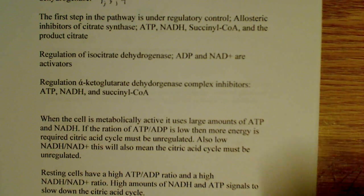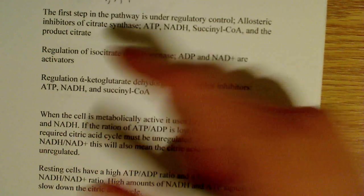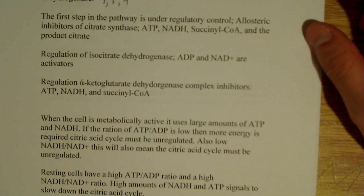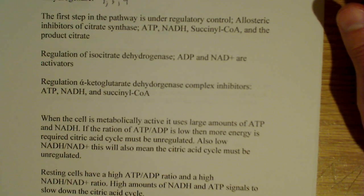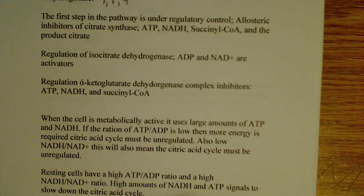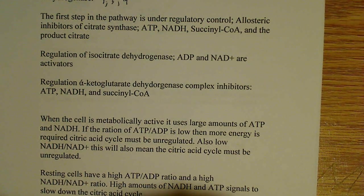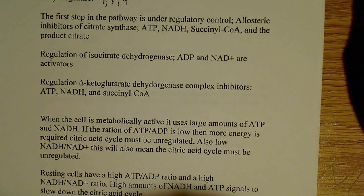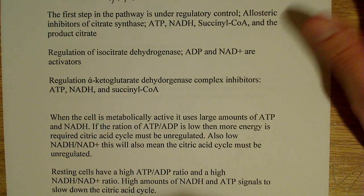Regulation of isocitrate dehydrogenase: ADP and NAD+ are activators. This makes perfect sense. If ADP is present in high concentrations, or NAD+ is present in high concentrations, it's telling you that the cell is low on energy. It's quite intuitive.